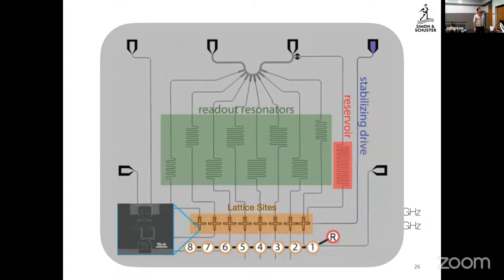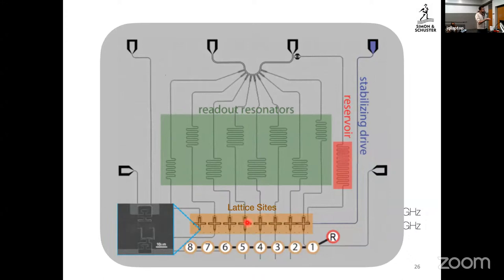This is what the sample looks like — color-coded to make it clearer. Each one of these objects is a lattice site; we call them transmon qubits because you can treat them as two-level systems, originally developed for quantum computing. We've sort of hijacked them for many-body physics. The capacitive coupling comes from the proximity between them, and we have a readout cavity for each lattice site to detect its occupation through a dispersive shift. You can think of this as a quantum gas microscope for microwave photons.